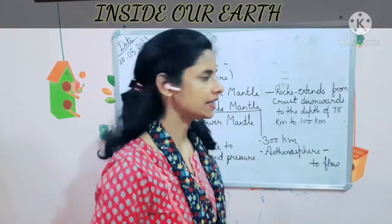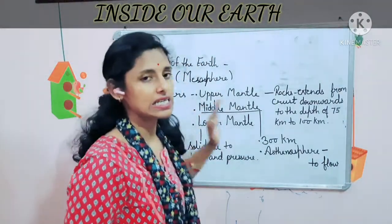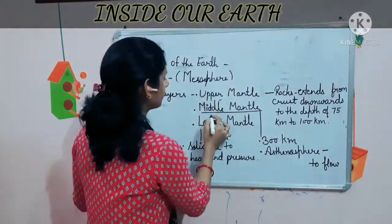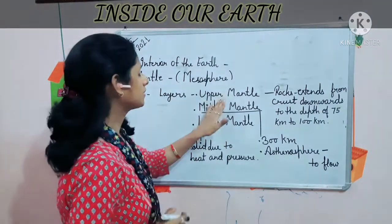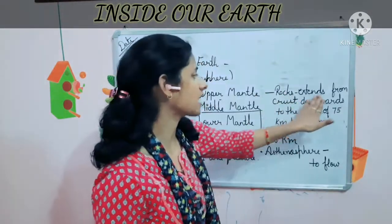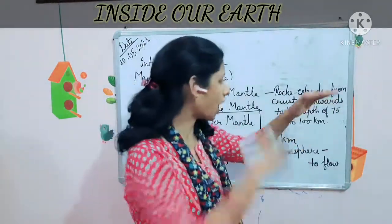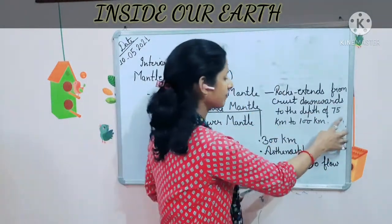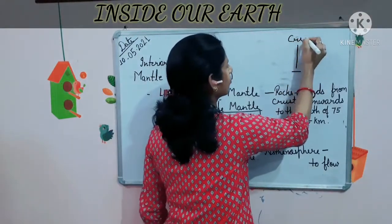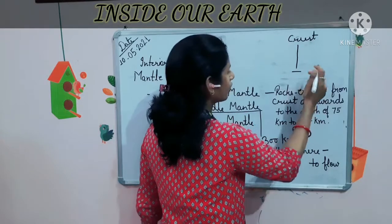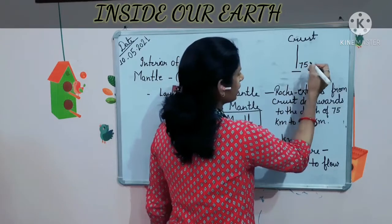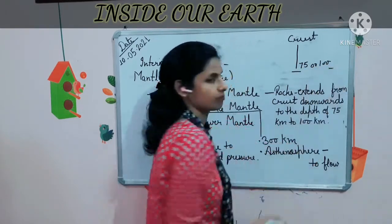The mantle consists of three layers: upper mantle, middle mantle, and lower mantle. The upper mantle is made up of rocks extending from the crust downward to a depth of 75 to 100 kilometers.